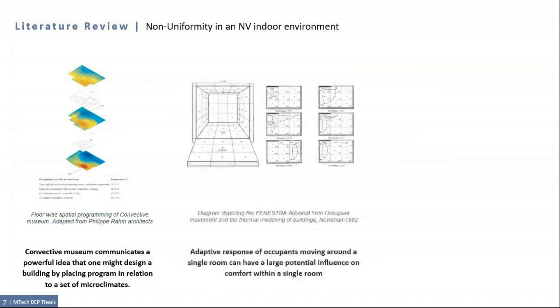Newsham in 1992 developed an extract which divided each of the six sides of the room into nine surfaces establishing a matrix of nine possible locations that an occupant could inhabit to make themselves more comfortable. Newsham illustrated that adaptive response of occupants moving around a single room can have a large influence on comfort. He also said that potential of this adaptive range is likely much greater over a fourth floor plate because of different orientation.